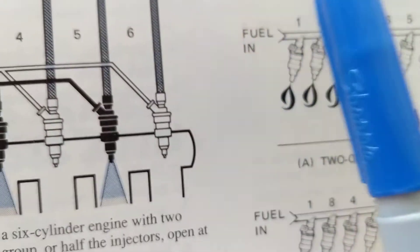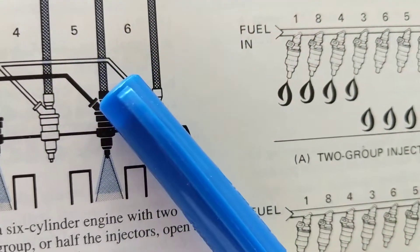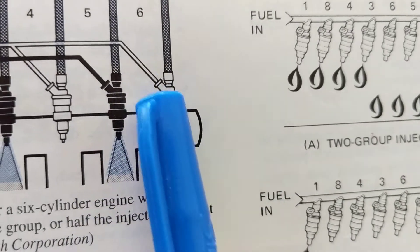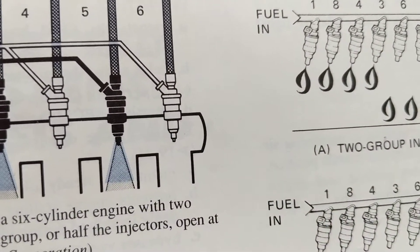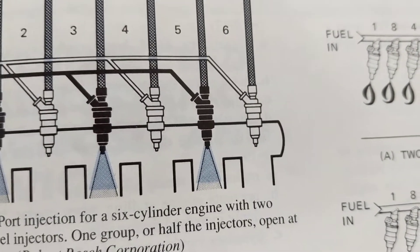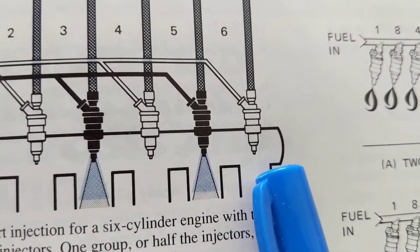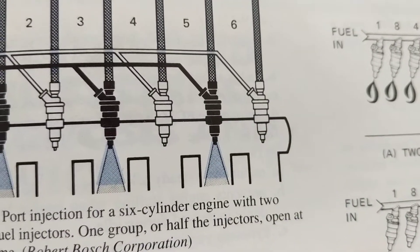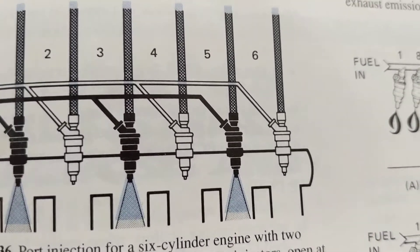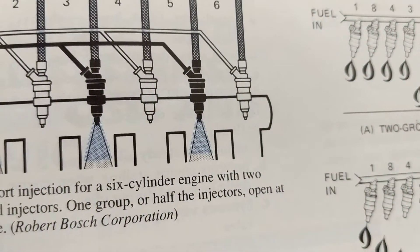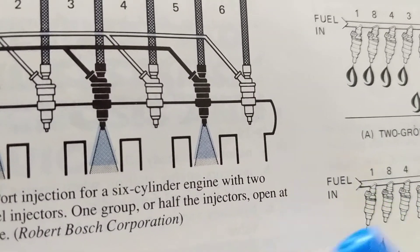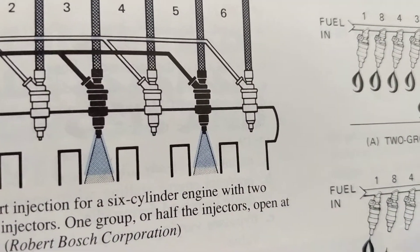The computer takes all the sensor inputs — air temperature, throttle position, brake status — and adjusts the air-fuel ratio by controlling the fuel injectors. During idle, it adjusts the idle air control valve, which used to be manual but is now fully computer-controlled. The goal of all these different fuel injection systems is better fuel economy and lower emissions. The downside of grouped injection is you don't have much time to adjust individual cylinders independently.